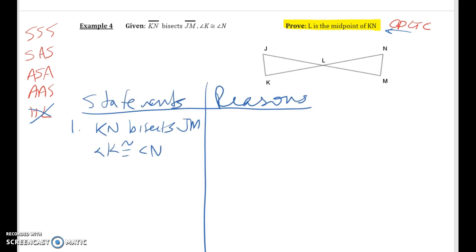We have our given information: KN bisects or cuts in half JM. We have angle K is congruent to angle N. Again, they give that to us. Based on that given information we have an angle, and we're going to be able to get another information about the side. This will produce a side for us.